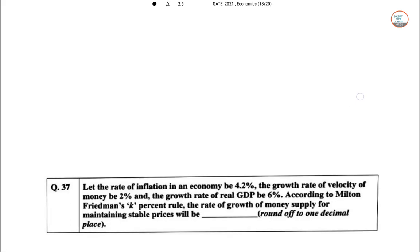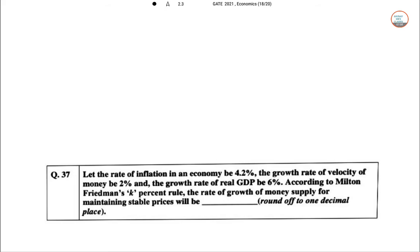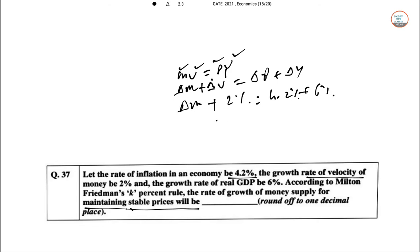Next, we move on. The tax rate of inflation is 4.2%, the velocity of money is 2%, and real GDP growth is 6%. To find stable price, we use the formula MV = PY, where M is money supply, V is velocity of money, P is price level, and Y is income. So ΔM + ΔV = ΔP + ΔY. ΔM needs to be calculated: this is 2%, this is 4.2%, and this is 6%. So ΔM = 4.2 + 6 - 2 = 8.2%. So the answer is 8.2%.